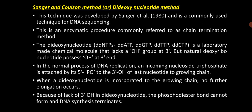When a dideoxy nucleotide is incorporated into the growing chain, no further elongation occurs. Because for chain elongation there must be a hydroxyl molecule at the 3' end of the growing strand. Only then can the next adjacent nucleotide be connected to form a phosphodiester bond between the hydroxyl molecule at the 3' end and the phosphate molecule at the 5' end. Because of the lack of the 3' hydroxyl molecule in the dideoxy nucleotide, the phosphodiester bond cannot be formed and DNA synthesis terminates.